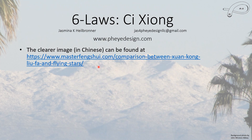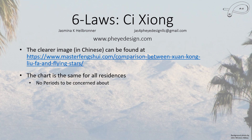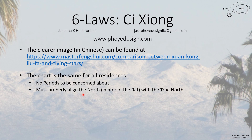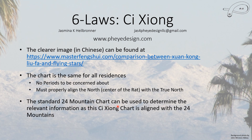If you want a clearer image of that chart, you can get one in Chinese — I haven't seen one in English — but you don't really need it. The chart is the same for all residences, all businesses, all buildings, and there is no period to be concerned about either. So it's very different from the Flying Stars. You do have to properly align north — which is the center of the Rat — with the true north of your house. Any standard 24-mountain chart can be used, as this Qihong chart is aligned completely with the 24 mountains.